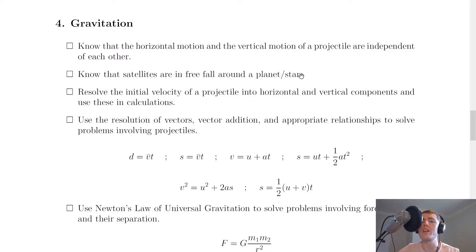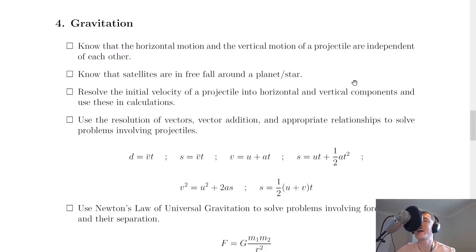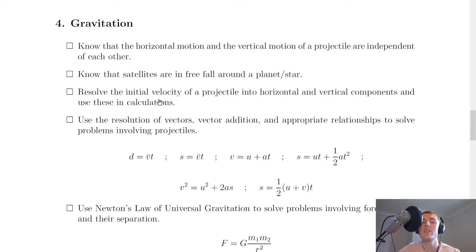Remember we looked at satellites and projectile motion and why satellites will remain in a circular path around a planet or star. From Newton's thought experiment, the satellite will be falling away from the planet at the same rate as the planet curves away from it, so it's essentially in free fall, accelerating towards the planet due to gravity, and it's going to maintain its circular motion.